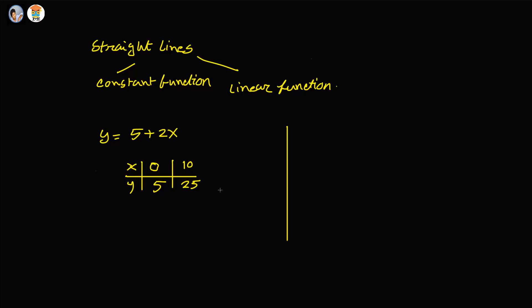Now let us draw it. This is the y-axis, and this is the x-axis. Here, if x is equal to 0, y is equal to 5. So this is 5 on the y-axis. And here we have 10, 15, 20, and 25 on the axis. For the first point: if x is equal to 0, then y is equal to 5.